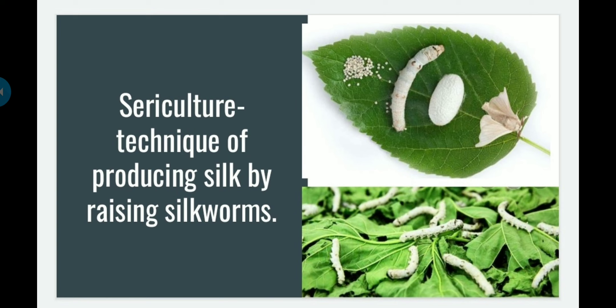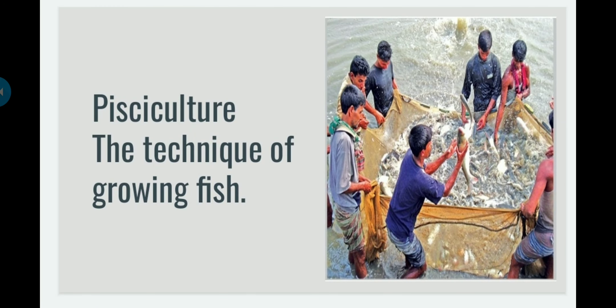The next branch is pisciculture — the technique of growing fish, especially edible fishes. Do not confuse pisciculture with aquaculture. Aquaculture includes growing not only fishes but also crabs and pearl oysters. Pisciculture specifically refers to the technique of growing edible fishes.